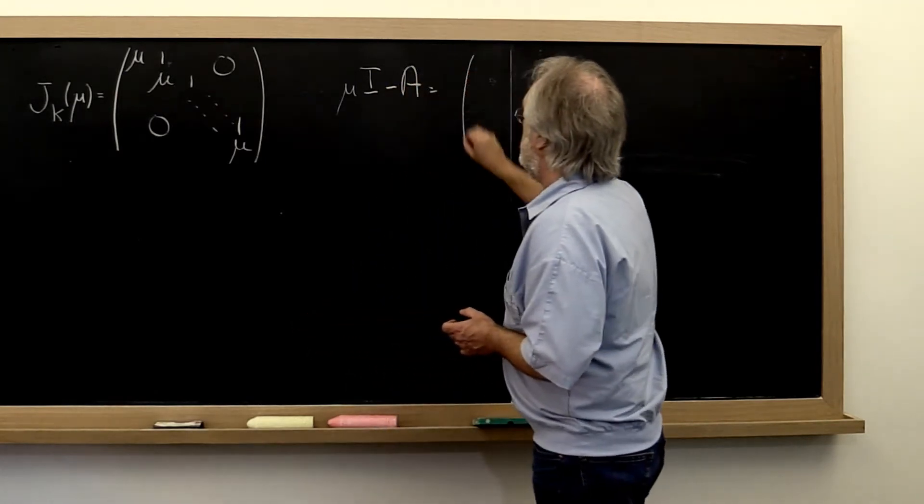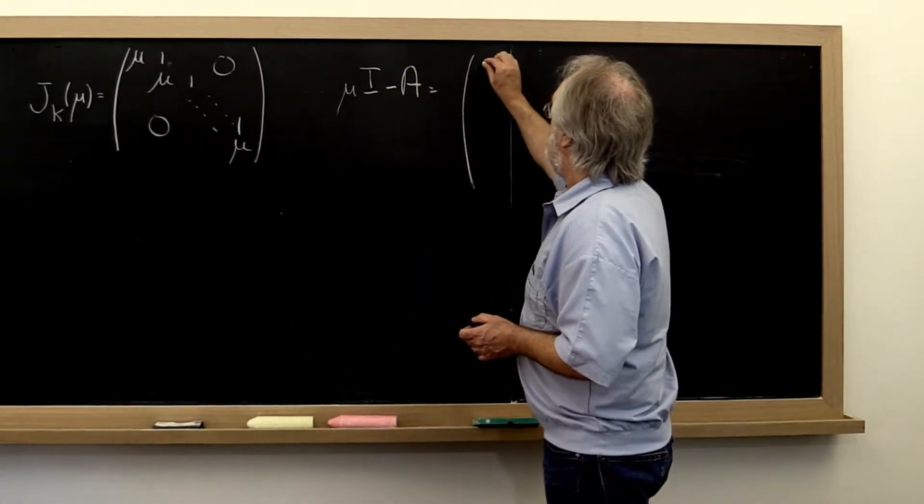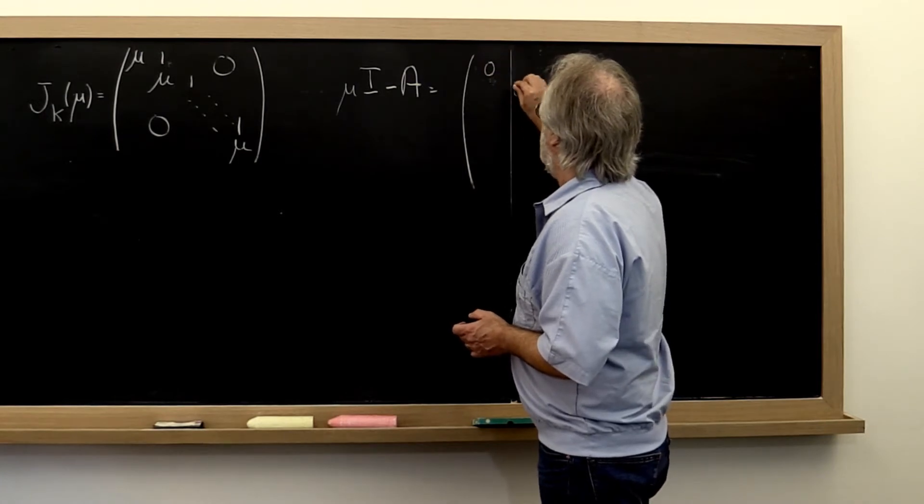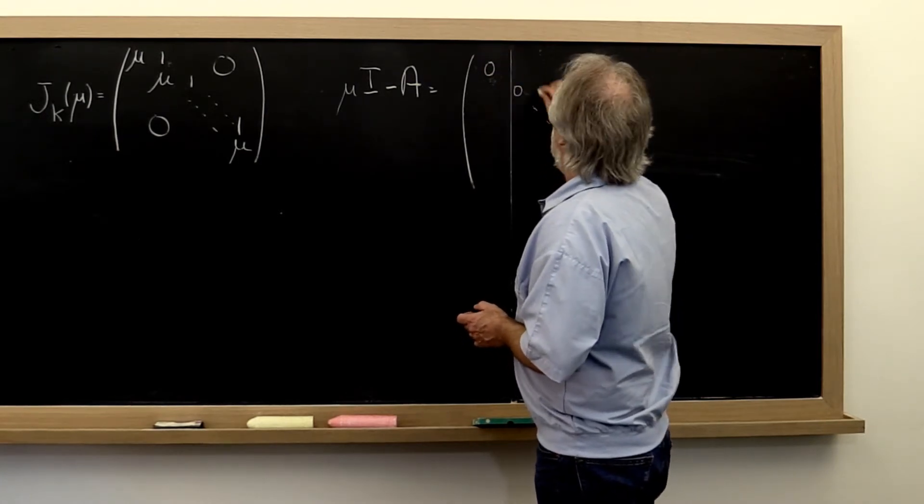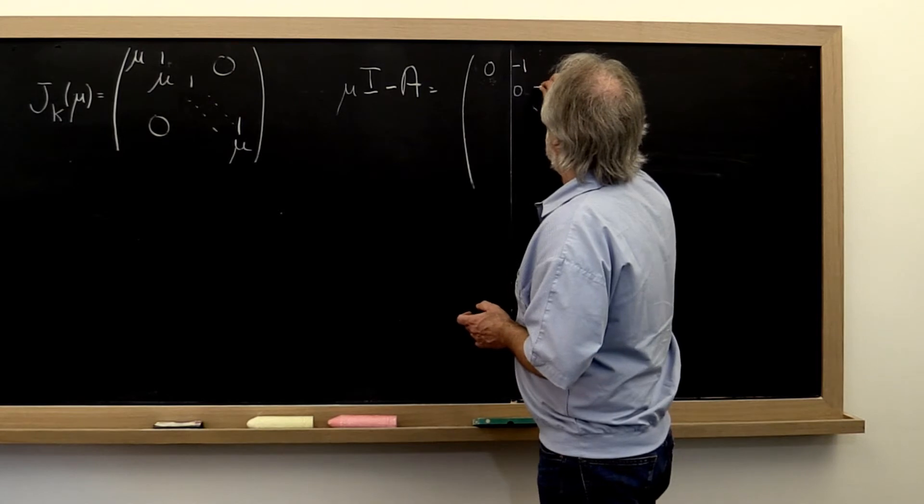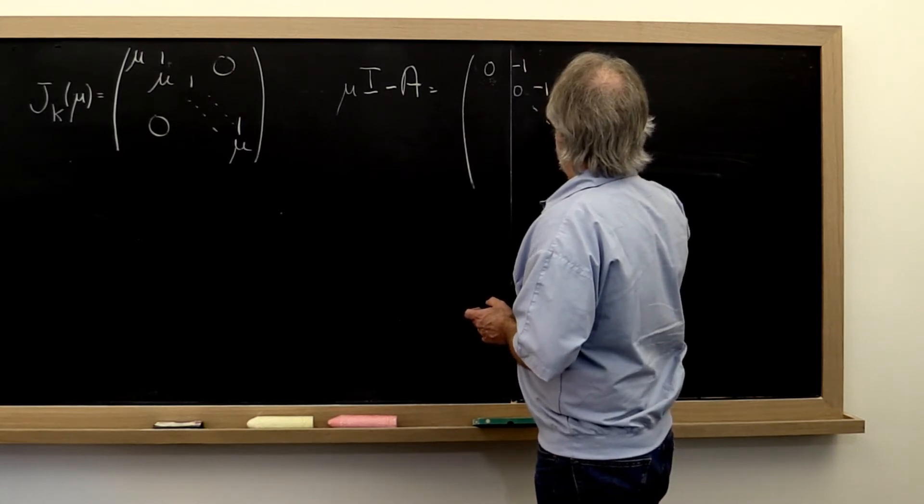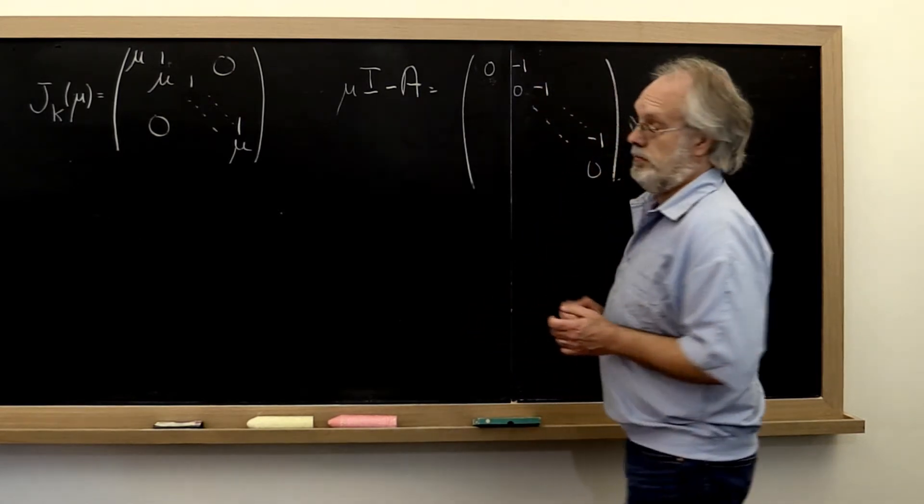And in this particular case, that is the matrix that has zeros on the diagonal and minus ones on the super diagonal.